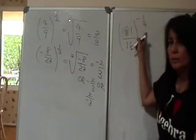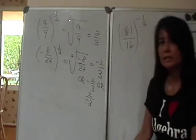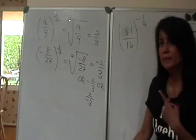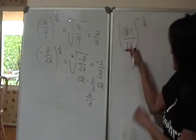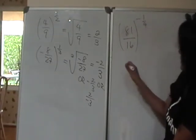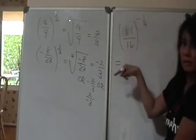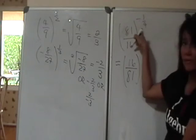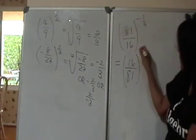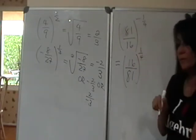81 over 16 to the negative 1/4. Again, we appeal to that rule, which is a to the negative n is equal to 1 over a to the n. But I think I explained a while back that if you have a fraction and the exponent is negative, really all you need to do is get the reciprocal of the fraction. The reciprocal of the fraction is 16 over 81, and change that negative exponent to positive. So you have 1/4.